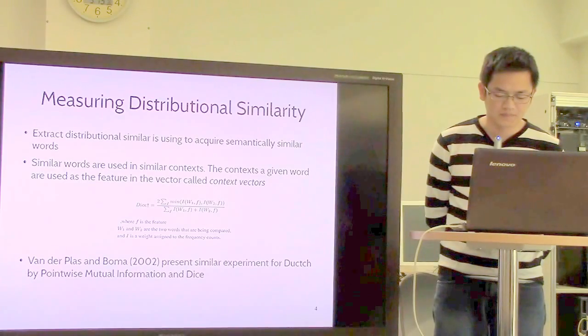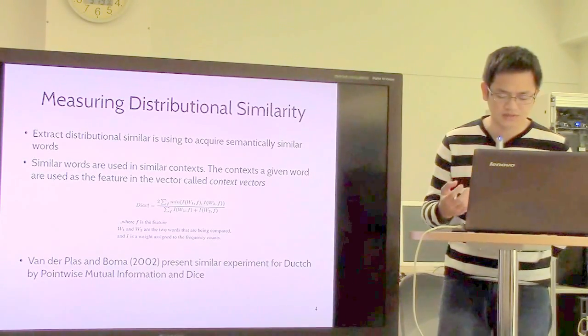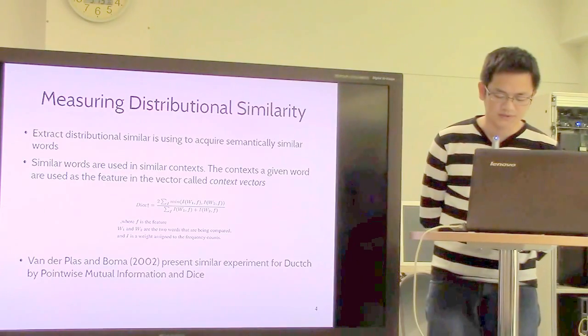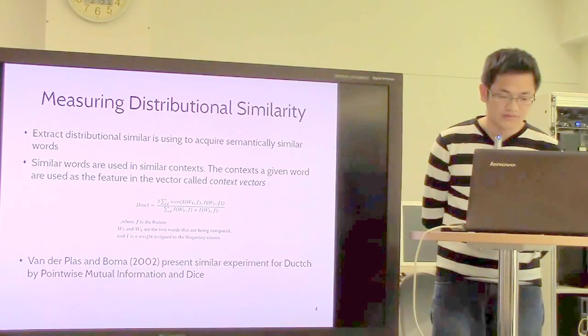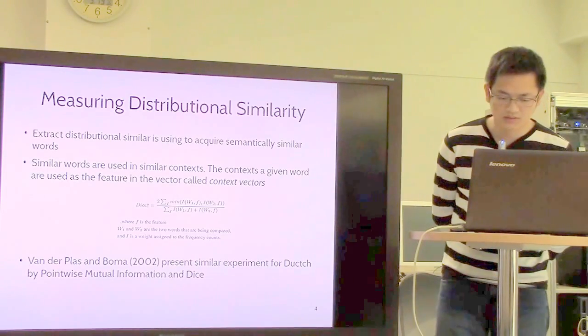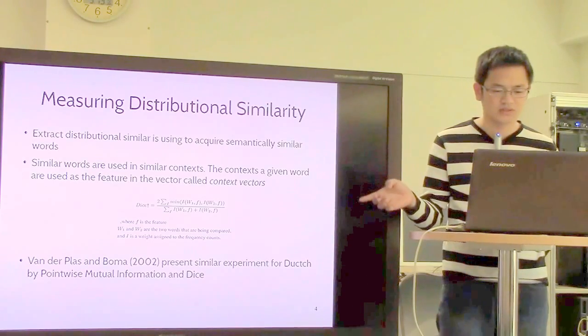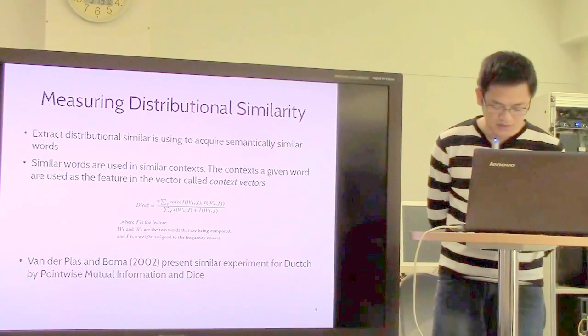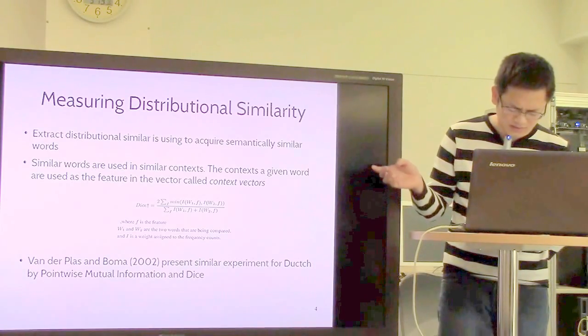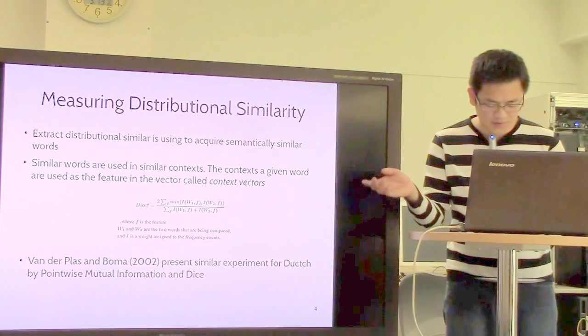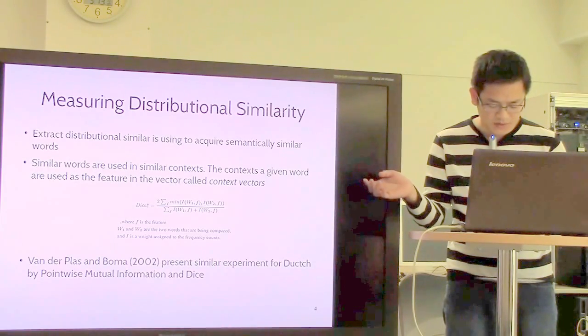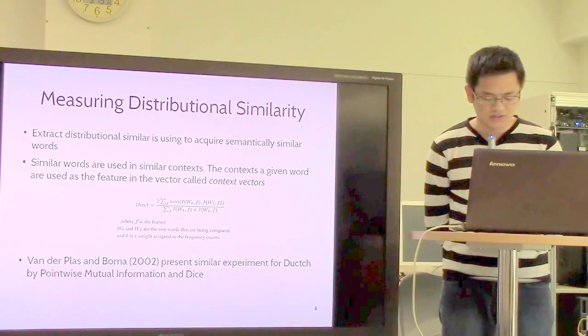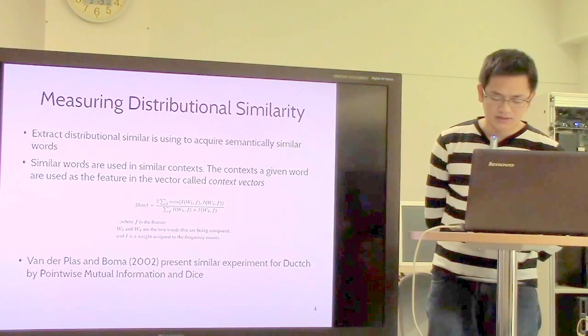There are several measures for this method, like Kullback-Leibler and others. Lin (2002) reported large-scale evaluation experiments. Van der Plas and Bouma presented similar experiments for Dutch using pointwise mutual information and DICE.